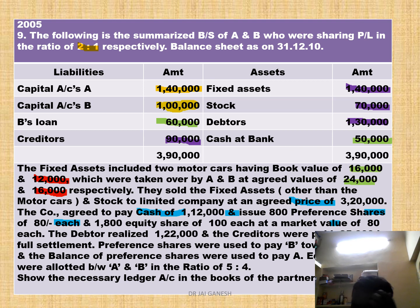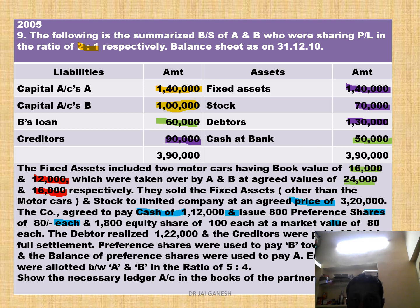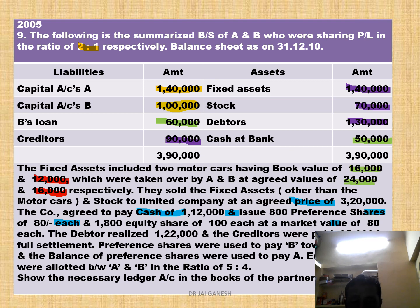Debtors realized Rs. 1,22,000 — clearly mentioned in the question. The company takes over only fixed assets and stock, meaning debtors, bank, and creditors are not taken over. So debtors are collected separately for Rs. 1,22,000. Creditors were paid Rs. 85,000 in full settlement.